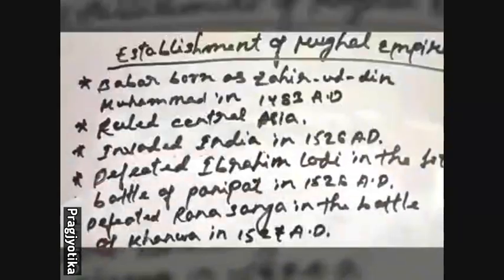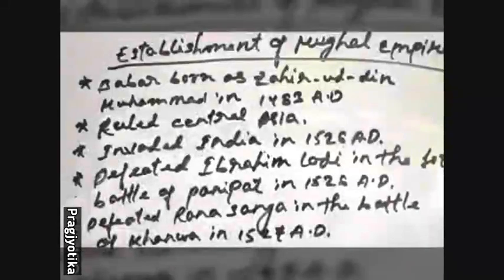Many of Ibrahim Lodi's nobles did not like him for his policies. So his own uncle, Daulat Khan Lodi, invited Babur to come and attack India. As a result, in 1526 AD, Babur came to India and defeated Ibrahim Lodi in the First Battle of Panipat. After defeating Ibrahim Lodi, Babur established the Mughal rule in India.